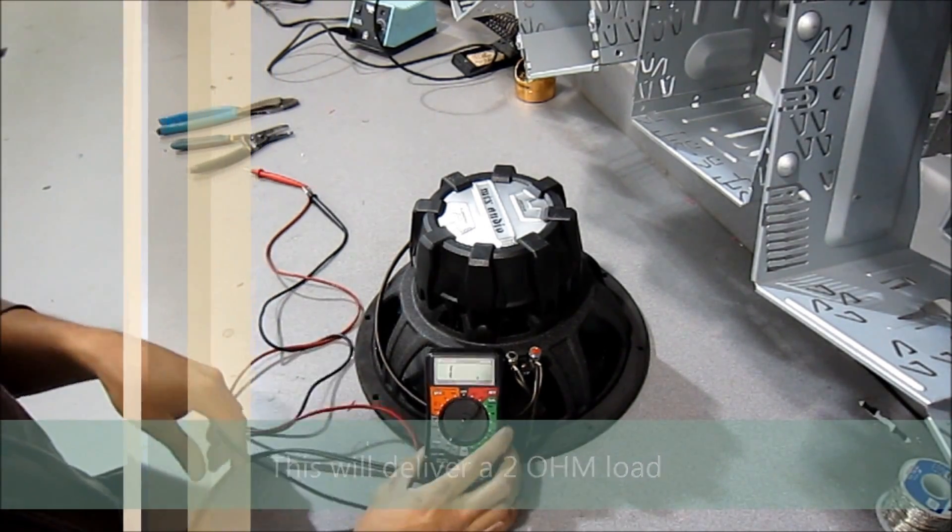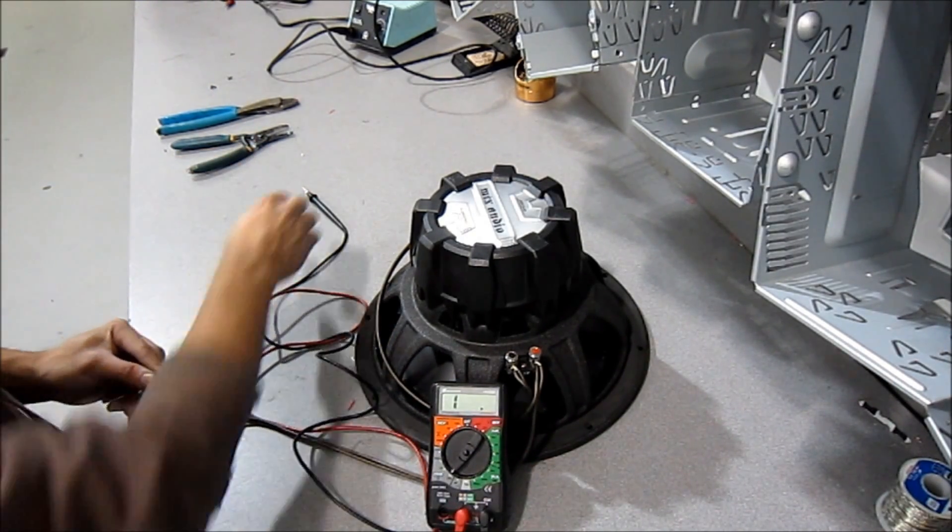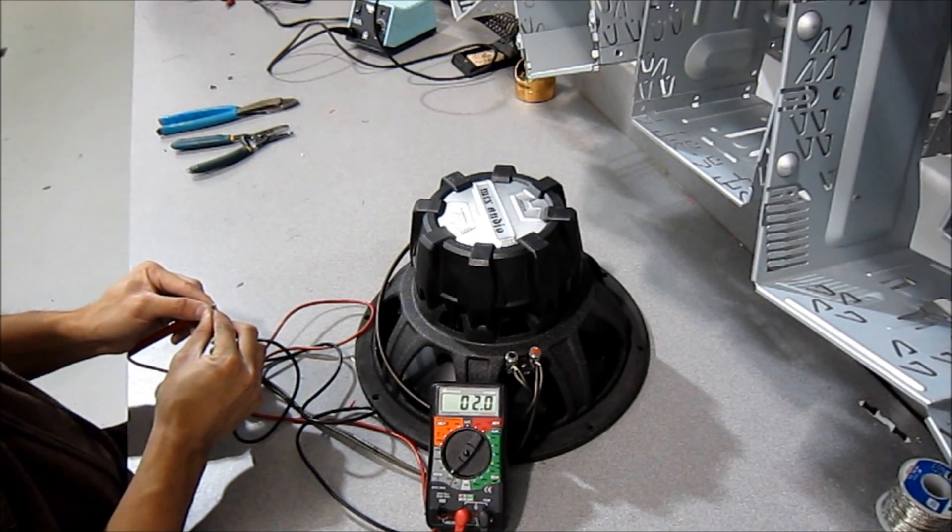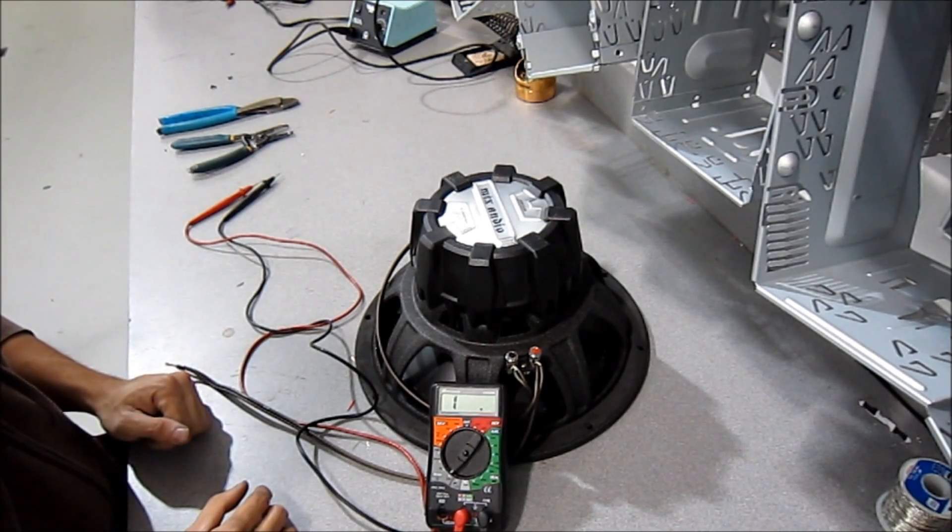So now your voice coils are wired up in parallel and you're set up for a 2 ohm load. So take your multimeter, hopefully you guys can see that, and just test it. So now we're at a 2 ohm load. So for a 2 ohm stable amplifier, you're going to get maximum power.